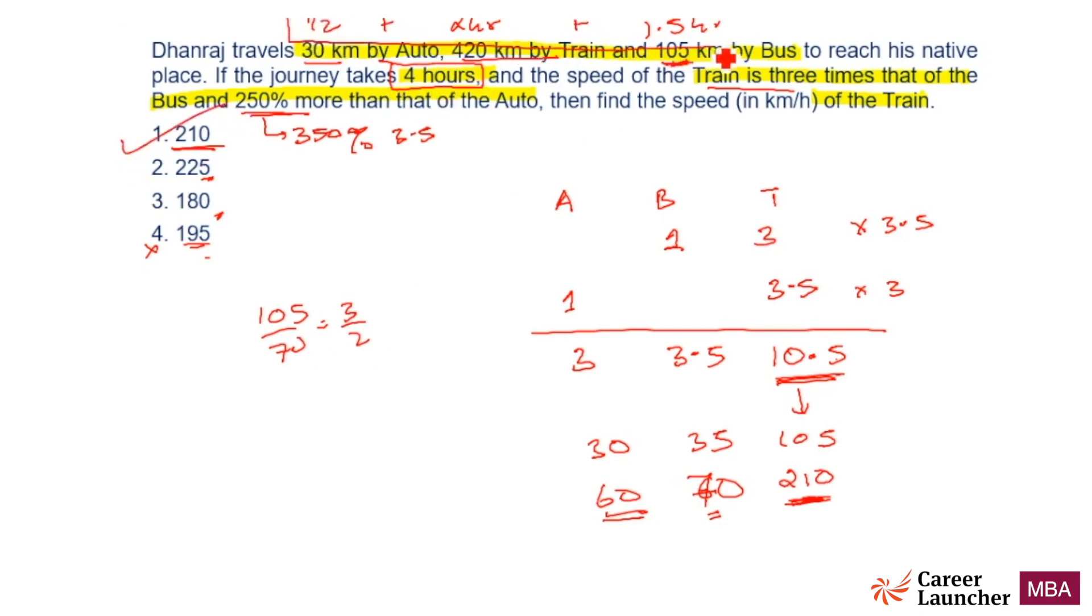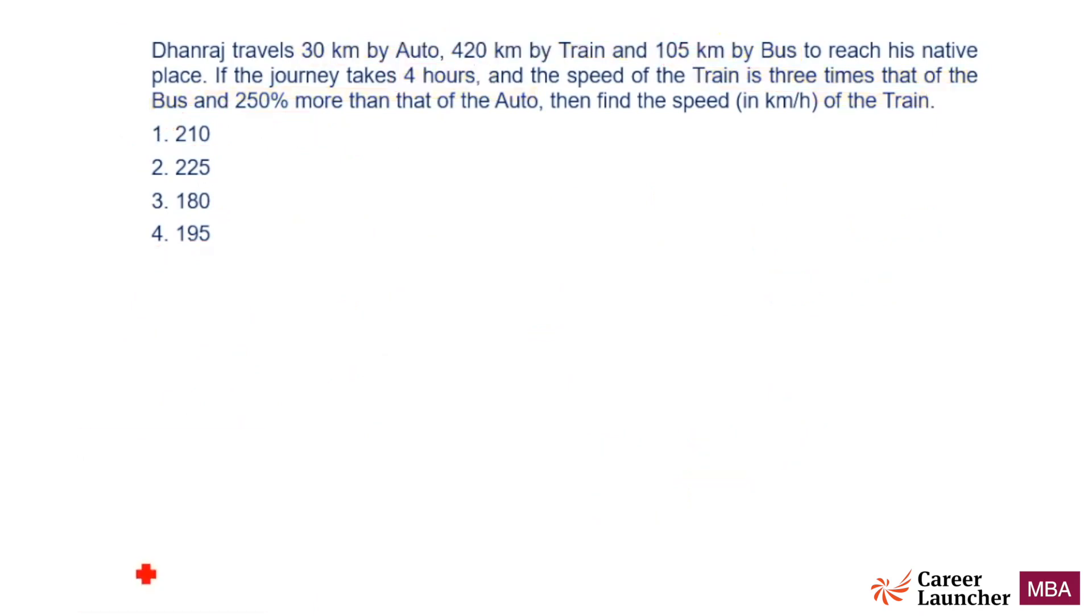Correct answer is 210 because at 210 the time taken is coming out to be 4 hours. Now in this question you could say you were fortunate that only one choice is a multiple of 105.